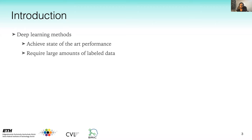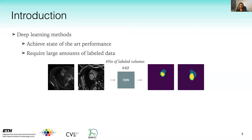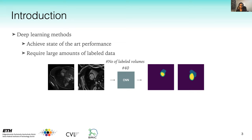To automate segmentation tasks, the recent popular methods are deep neural networks, which achieve state-of-the-art performance on many challenging datasets of different organs acquired in different modalities. But to achieve such high performance, we need hundreds of labeled examples. For instance, if we train a CNN with 40 labeled volumes, we see very good segmentation results on test images. But if we train the same network with just one 3D volume, we get very bad results on test images.